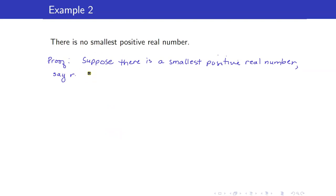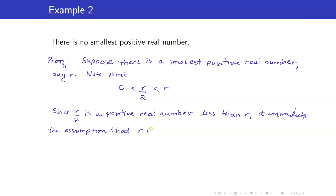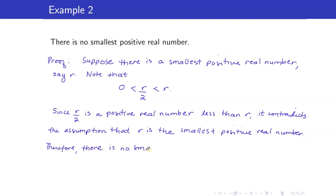How can we arrive at a contradiction? Note that R/2 is positive and it is less than R. We have found a positive real number smaller than R, which contradicts the fact that R is the smallest positive real number. Since R/2 is a positive real number less than R, it contradicts the assumption that R is the smallest positive real number. Therefore, there is no smallest positive real number.